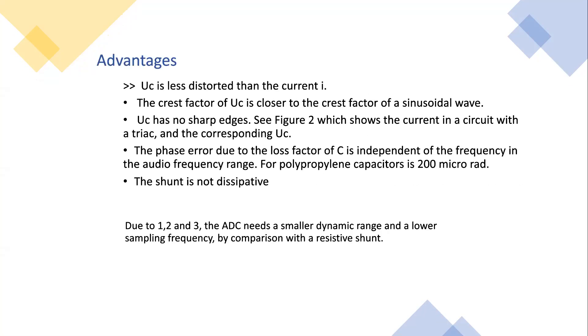Advantages: Uc is less distorted than current. The crest factor of Uc is closer to the crest factor of a sinusoidal wave. Uc has shorter rise phases. Figure 2 shows the current with a triac and the corresponding Uc. The phase error due to the loss factor of C is independent of the frequency in the audio frequency range. For polypropylene capacitors, it is 200 microradians. The shunt is not dissipative. Due to 1, 2, and 3, the ADC needs a smaller dynamic range and a lower sampling frequency by comparison with a resistive shunt.